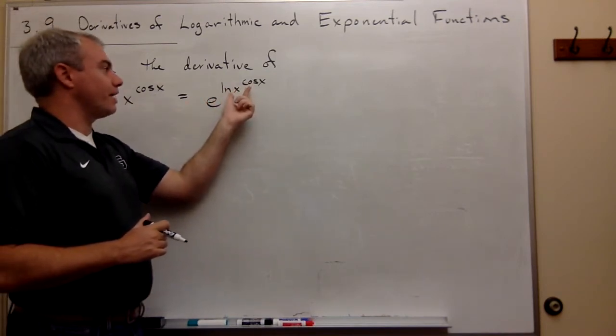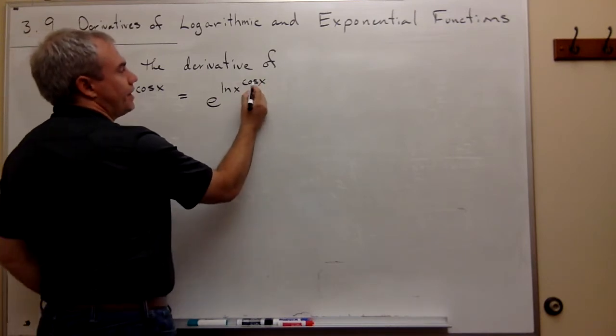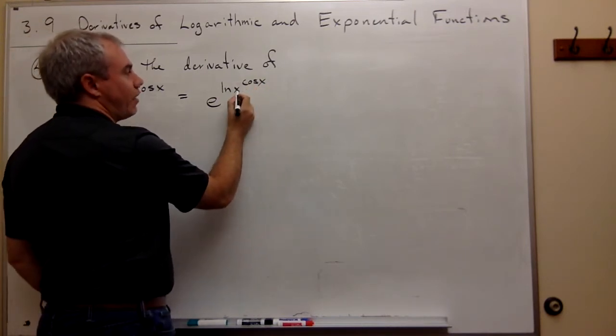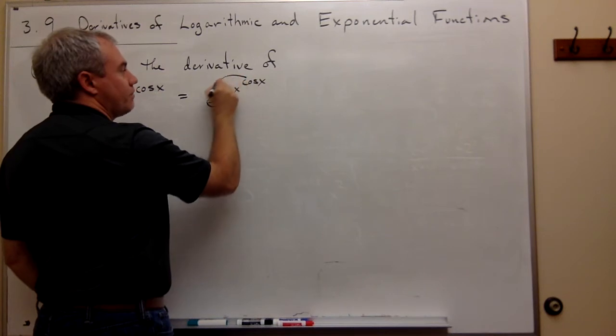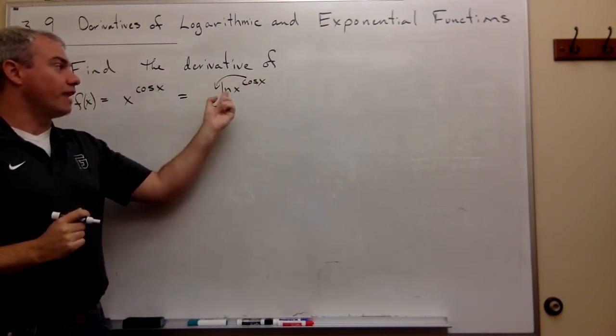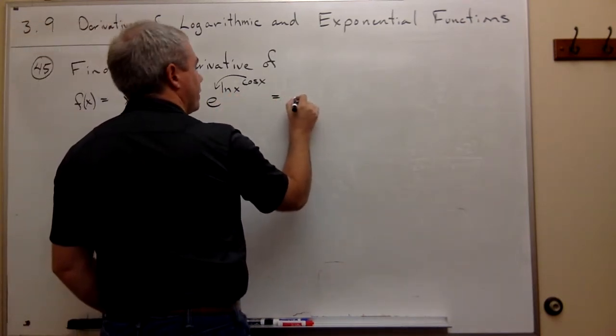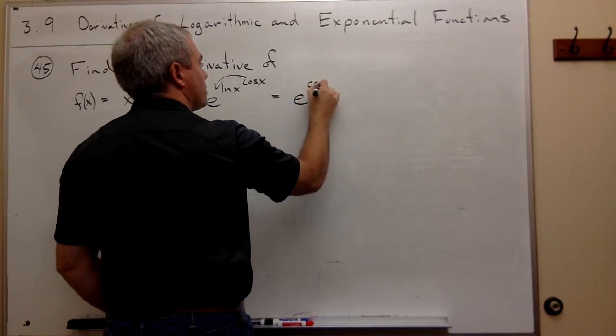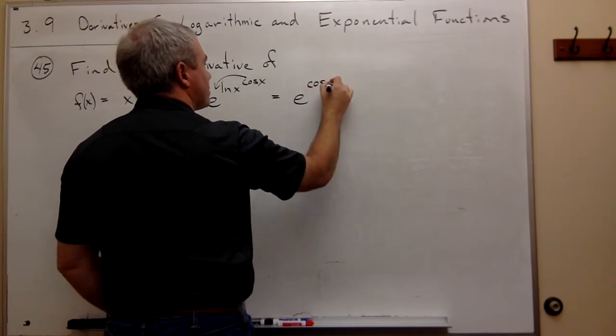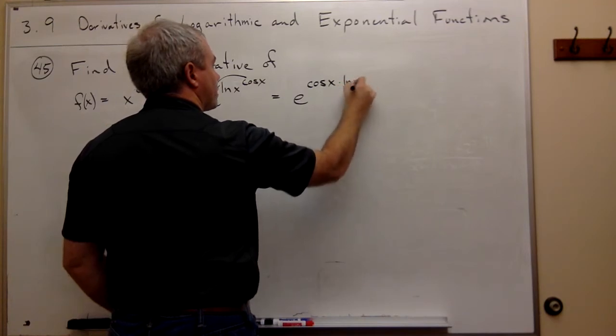But this can be simplified as well, because this cosine of x is a power of x, so that cosine by the power rule for logarithms can be pulled out in front of the ln of x. So let's rewrite it again. So this could be written as e to the cosine of x times ln of x.